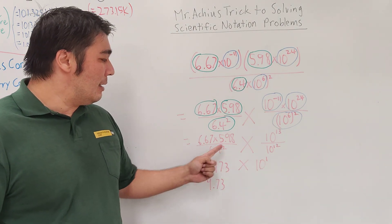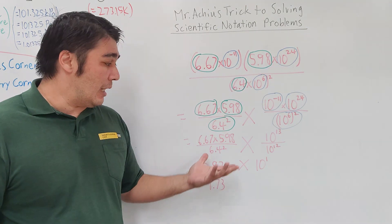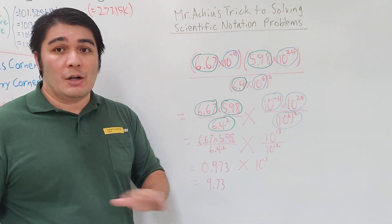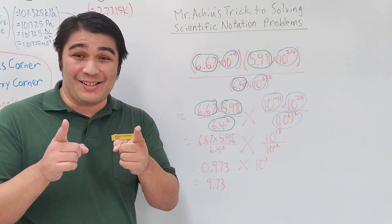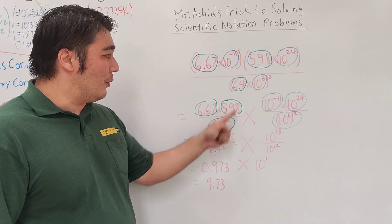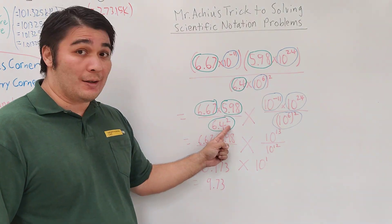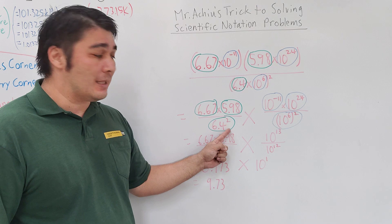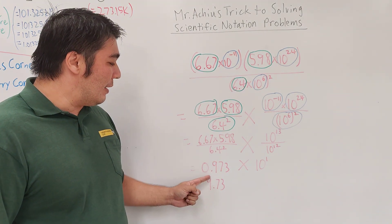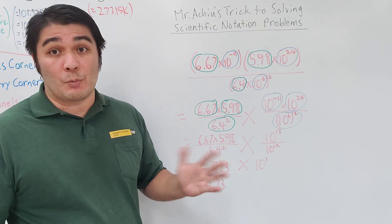All this messiness - these decimals - can be dealt with using a calculator. Don't forget that 6.4 is squared, so make sure that square continues into the next step. Once you've done that, you'll find the answer is 0.973 or 0.974, I'm rounding at this point, times 10 to the first.